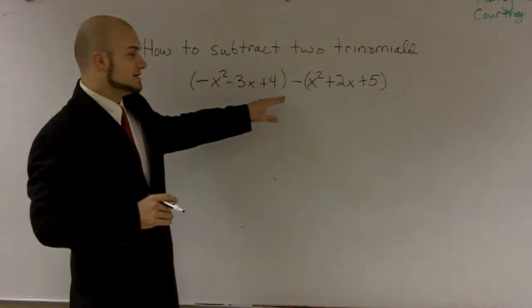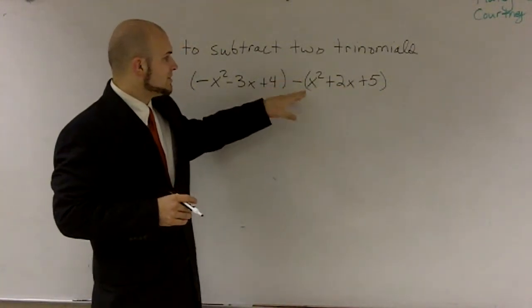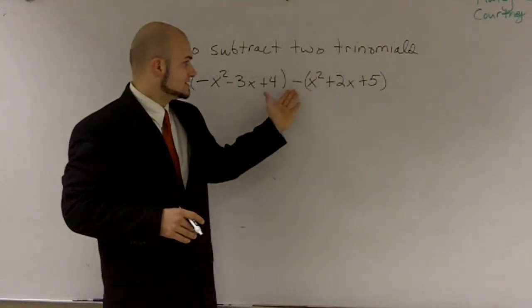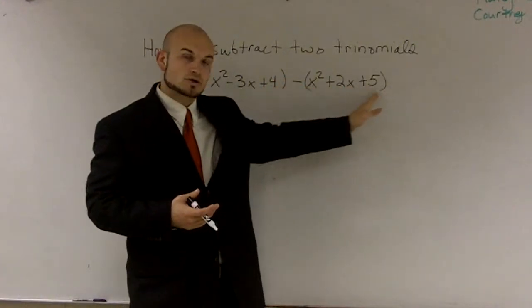First thing that we've got to look at is when I'm saying subtract this trinomial, what you've got to remember is I'm subtracting the x squared, the 2x, and the 5. That's why we put the parentheses around there for you to understand I'm subtracting this whole trinomial.